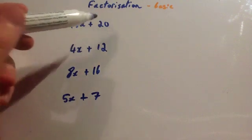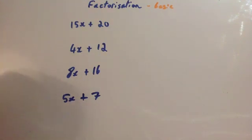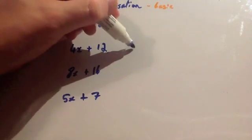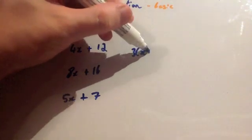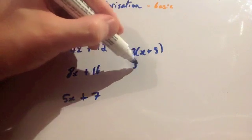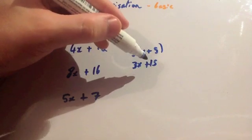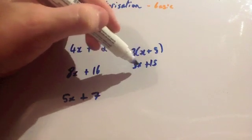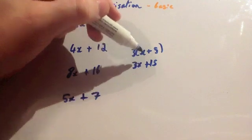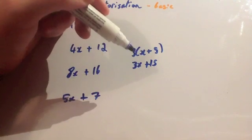In this video we are going to look at basic factorization. Factorization is the opposite of expanding brackets. So whenever you've got an expression like 3(x + 5), you could expand this: 3 times x is 3x, and 3 times 5 is 15, giving 3x + 15. Factorization is going from that expanded expression back to having brackets — it's putting the brackets back in.